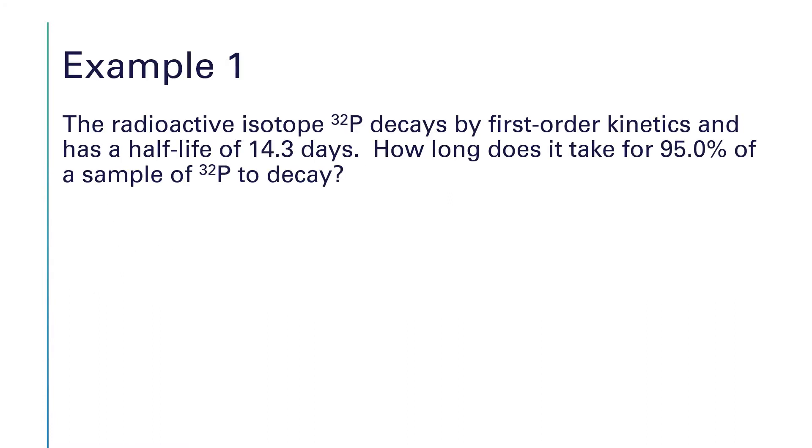In this example, we're told that a radioactive isotope of phosphorus has a half-life of 14.3 days. And we're asked to find how long it takes for 95% of the sample to decay. So they're talking percentages.